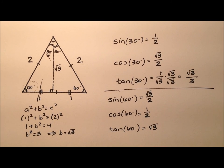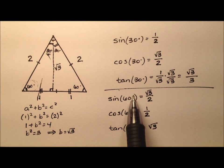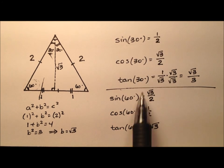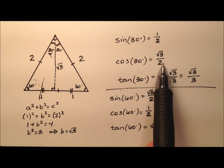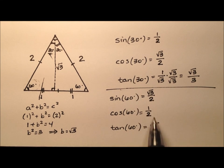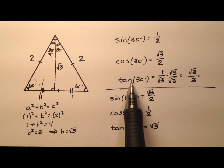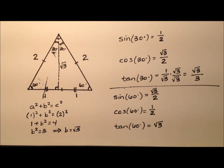I want to show you a couple of nice patterns. 30 and 60 degrees are complementary angles — they add up to 90. You'll see that the sine of 30, which is one half, equals the cosine of 60. And the cosine of 30, which is square root of three over two, equals the sine of 60. Also notice the tangent values are reciprocals of each other for complementary angles. That's how we can use geometry and trigonometry together, starting with an equilateral triangle, to get the exact values for sine, cosine, and tangent of both 30 and 60 degrees.